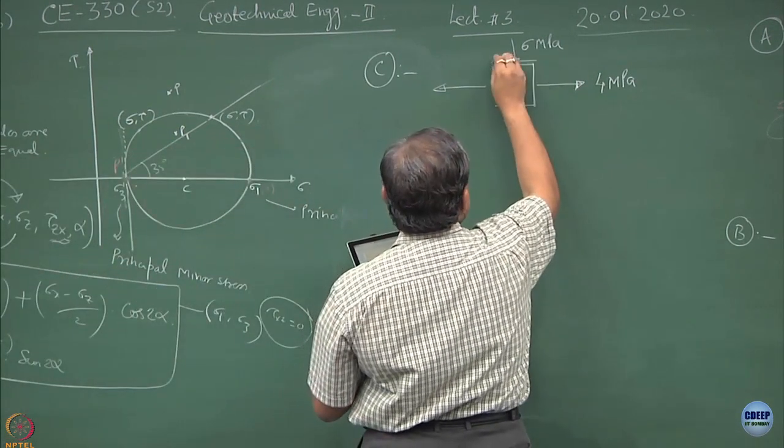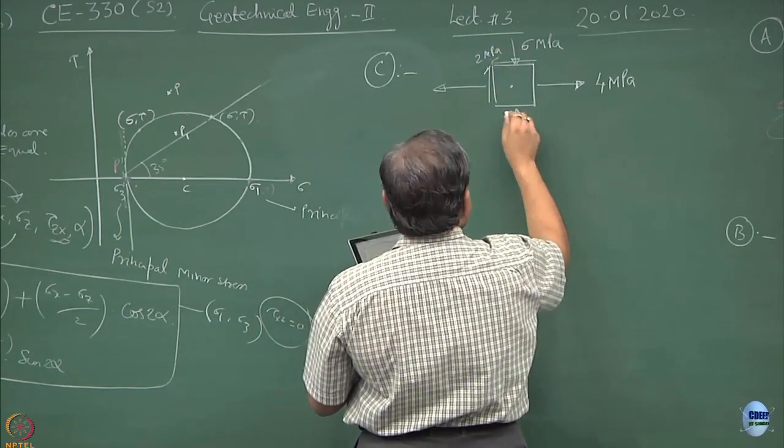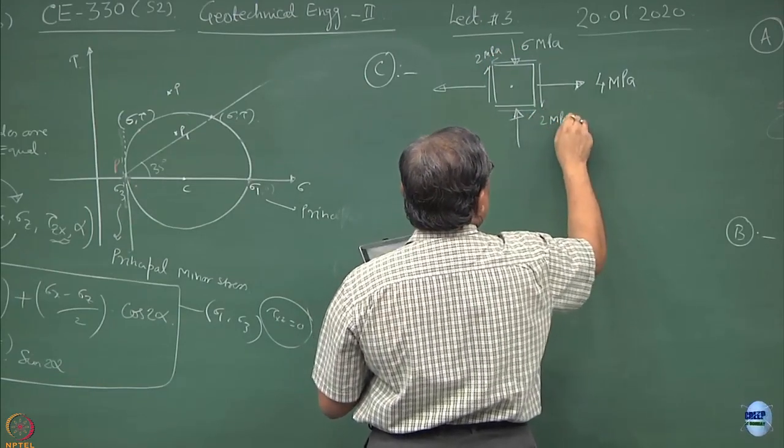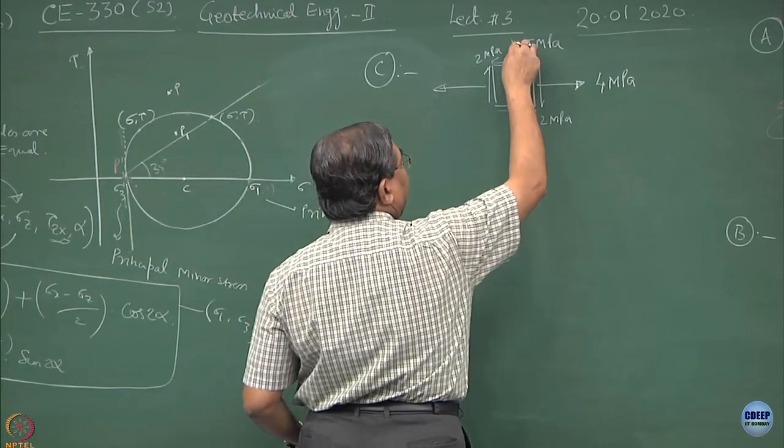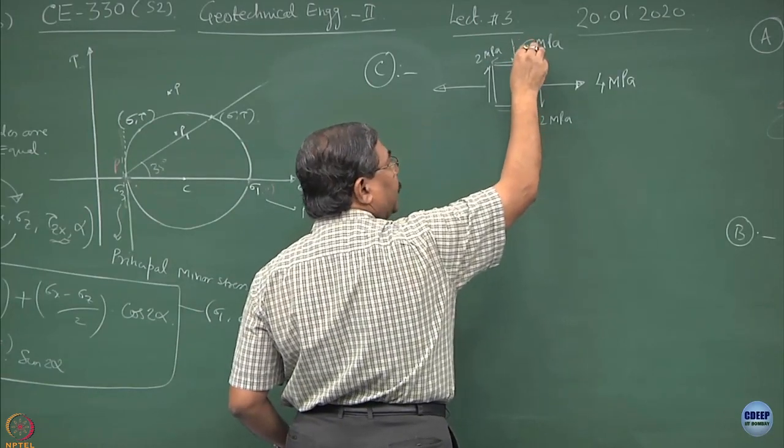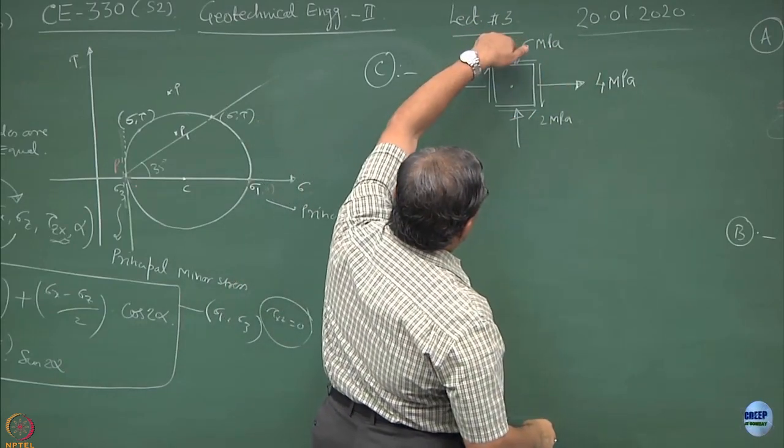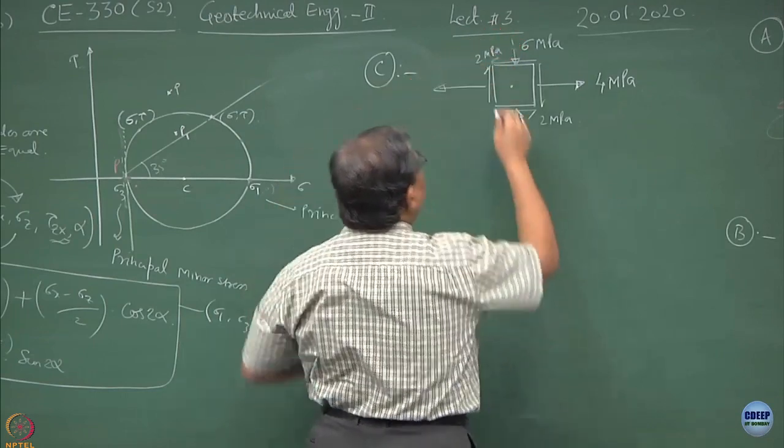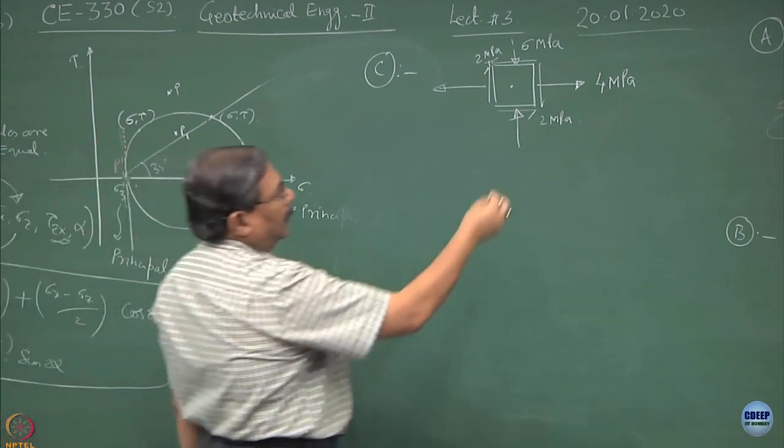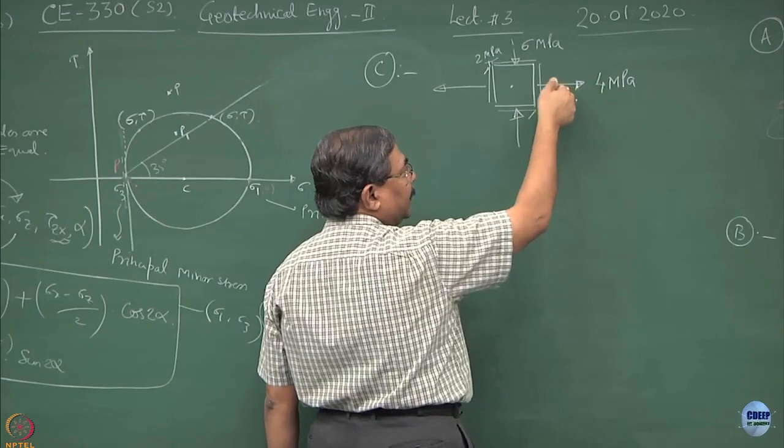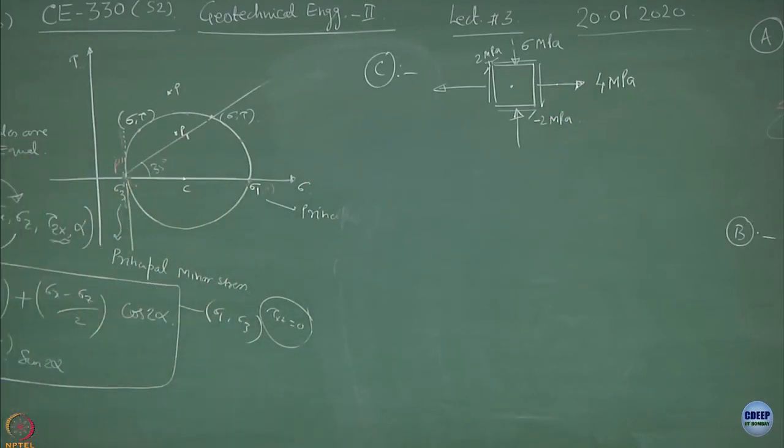The state of stress is you have shear stress acting at 2 MPa. The nomenclature is if I consider a point on this stress vector and if the direction of shear stress is clockwise, we consider this as positive. If I consider a point over here and if I see the direction of the shear stress is anticlockwise, this becomes negative.